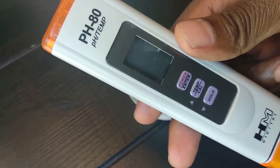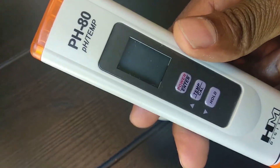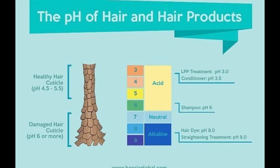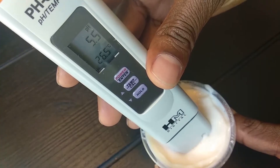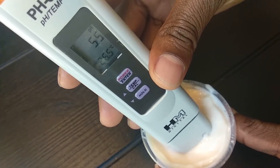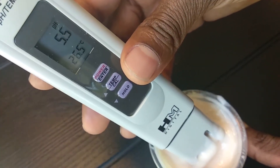The last thing is to check pH. Our hair and scalp pH level is between 4.5 and 5.5, and a good shampoo is supposed to be between pH 5 and 6. My shampoo pH is perfect for hair, and a high pH shampoo will damage hair.